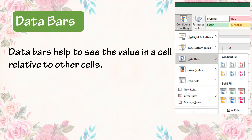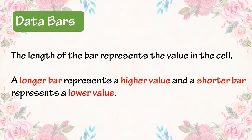Data Bars: Data Bars help to see the value in a cell relative to other cells. The length of the data bar refers to the value in a cell. A longer bar represents a higher value and a shorter bar represents a lower value.